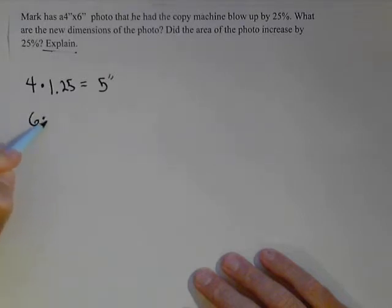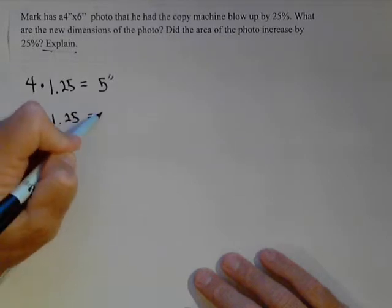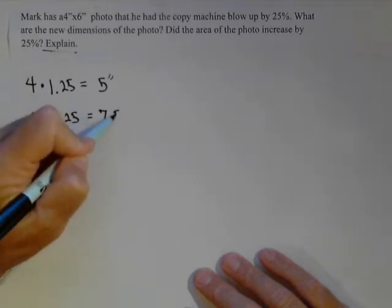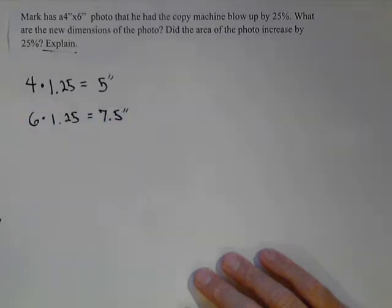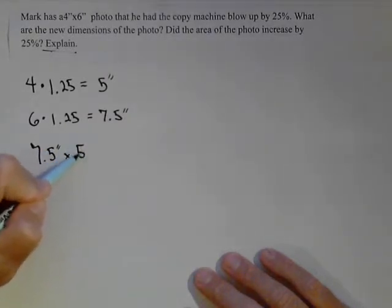We can do the same thing with 6. It's also being increased by 25%, which gives us 7.5 inches. So our new photo is 7.5 inches by 5 inches. That's what we would get out of the copy machine.